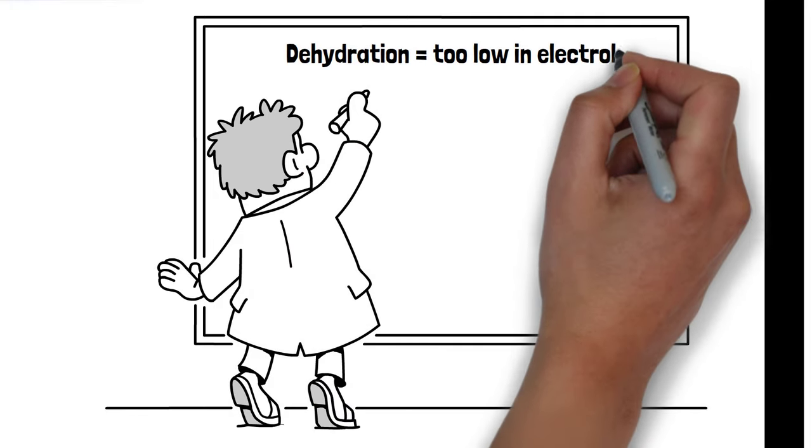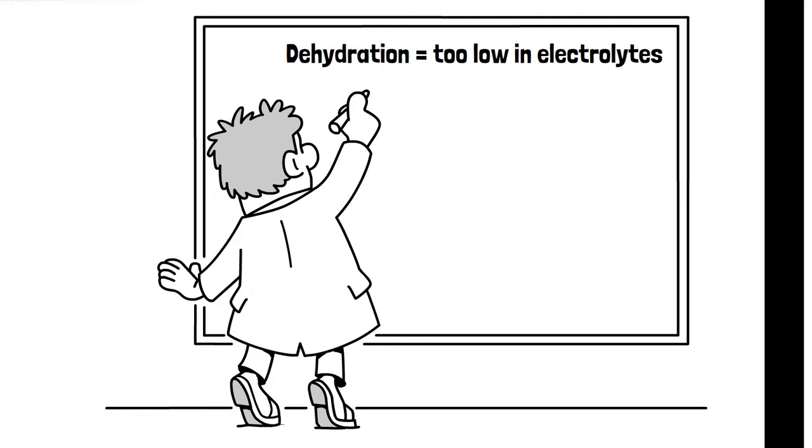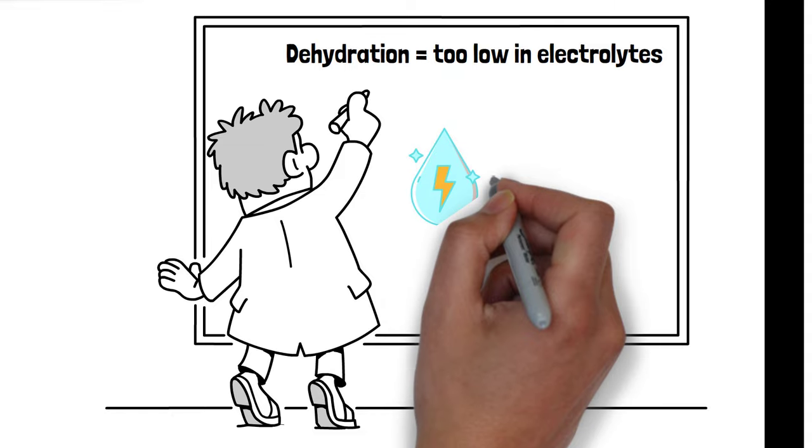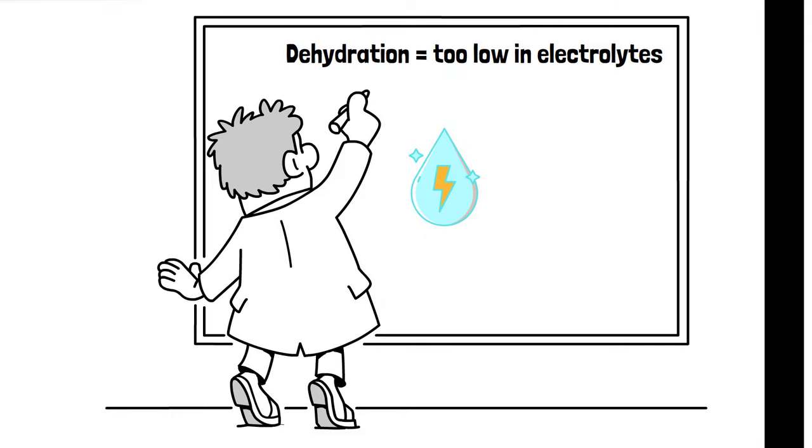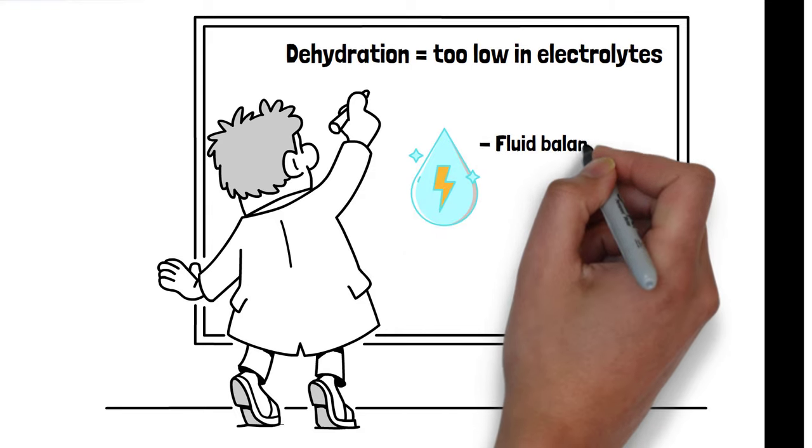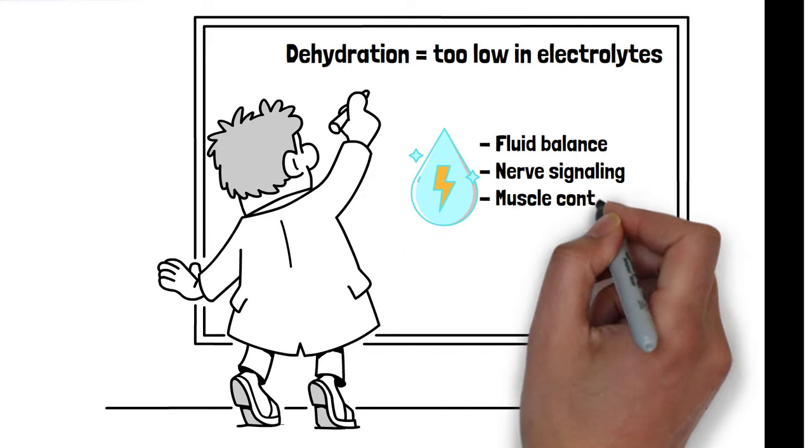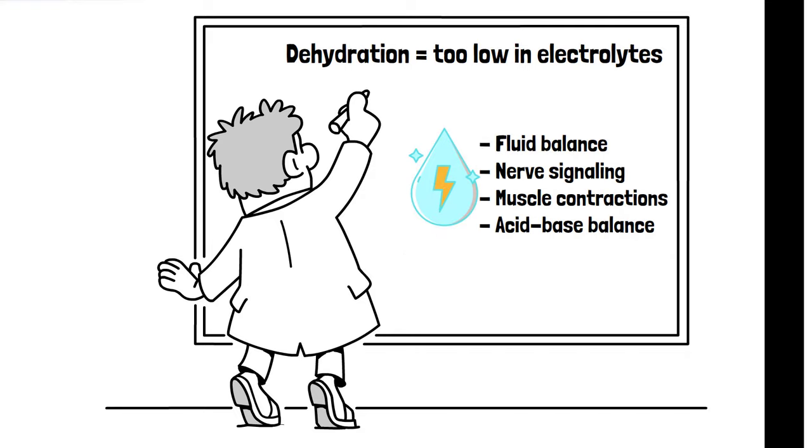When you are dehydrated, you are too low in electrolytes. Electrolytes are minerals that carry an electric charge when dissolved in water. They are essential for a variety of bodily functions, including fluid balance, nerve signaling, muscle contractions, and acid-base balance.